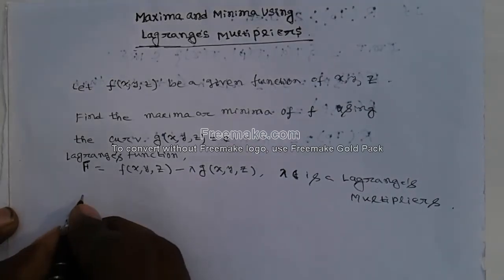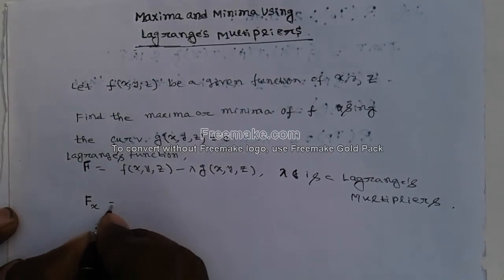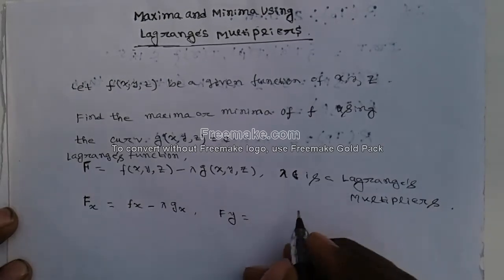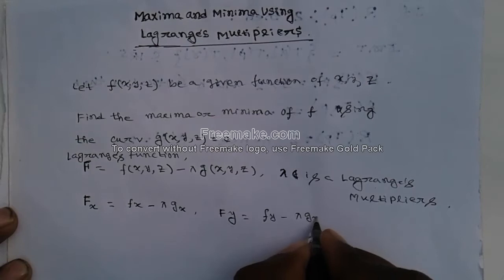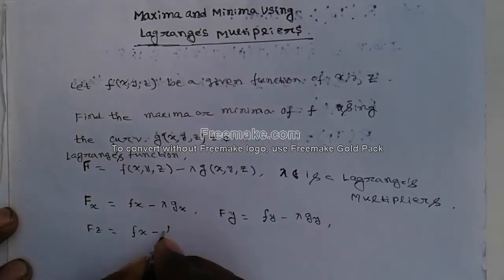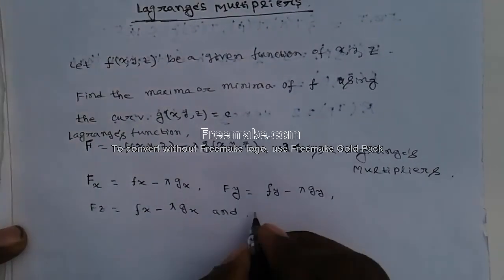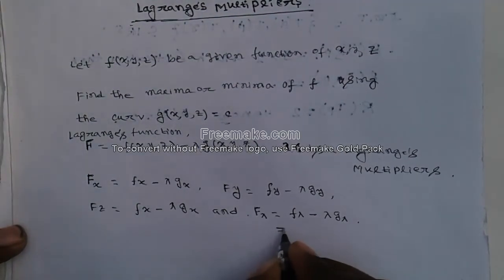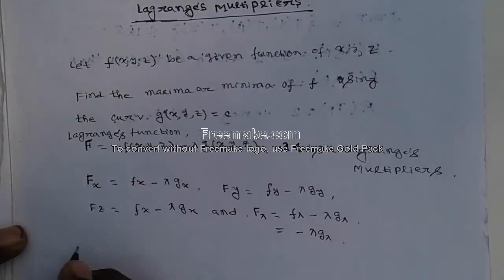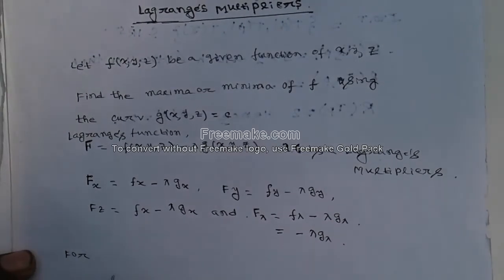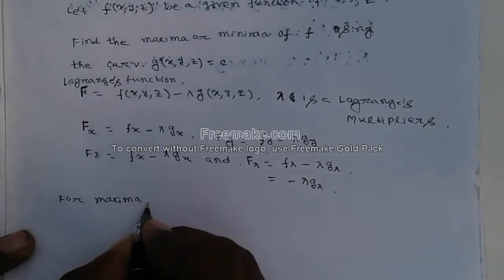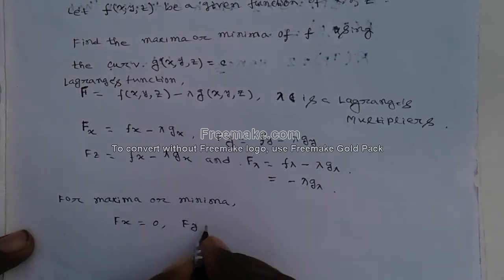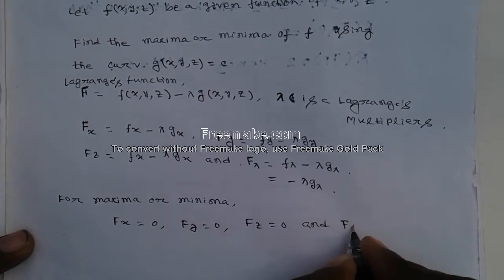For maxima or minima, we take the partial derivatives of F. We get: Fx equal to fx minus lambda times gx; Fy equal to fy minus lambda times gy; Fz equal to fz minus lambda times gz; and F-lambda equal to minus g, since f is not a function of lambda.